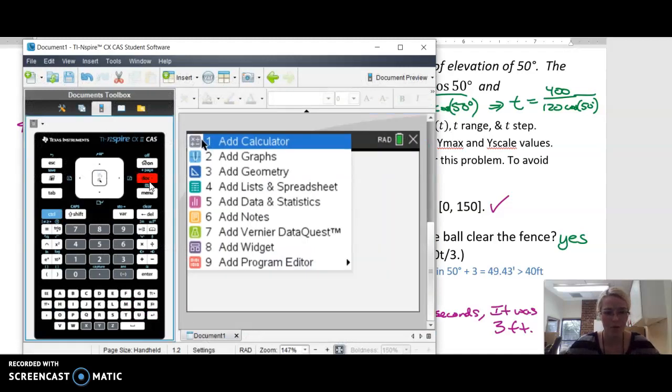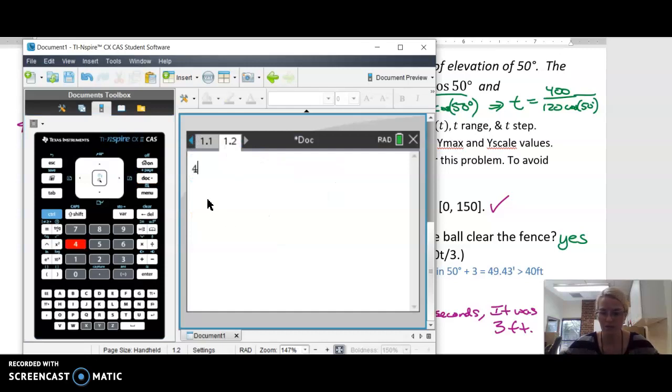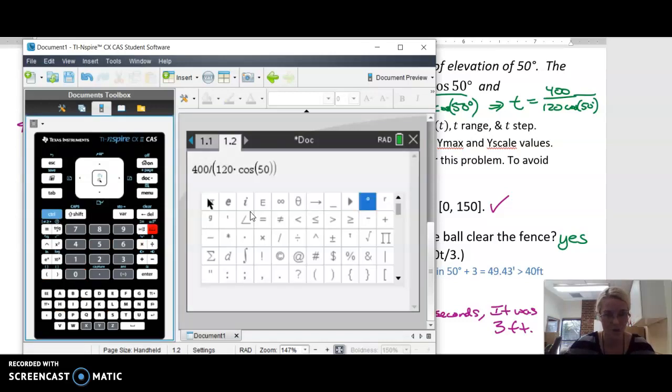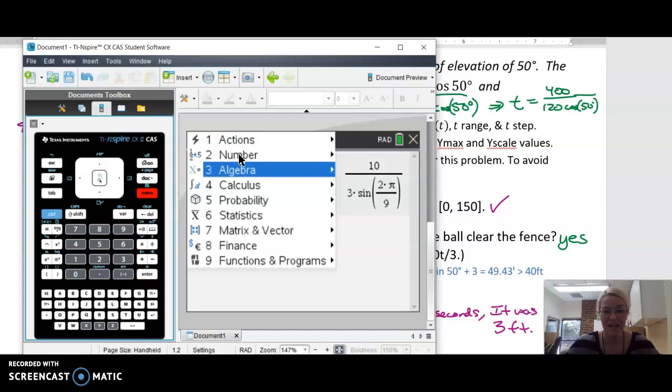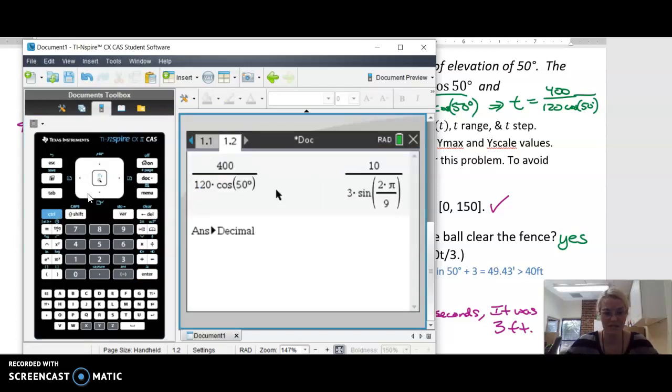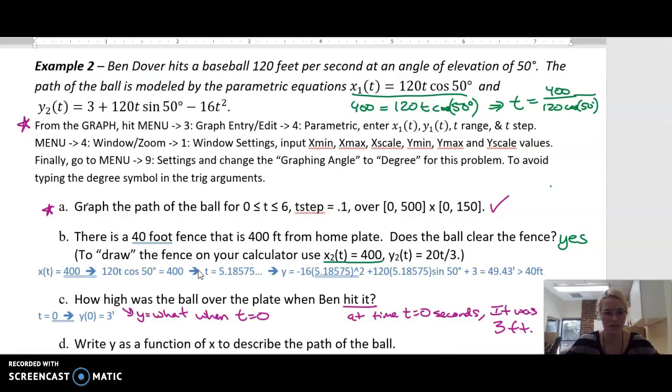I'm going to open up a new page, go to calculator, and I want to know what is 400 divided by parentheses 120 times cosine of 50 degrees. I'm going to type in the degrees symbol, close parentheses. It's going to give me a beautiful trig equivalence that doesn't help me. So I'm going to go to menu, number, convert that to a decimal for me. It's going to take the previous answer. That's about five seconds. It takes five seconds for it to reach 400 feet away from home plate in the purely horizontal direction. So 5.18575 is what you see, solving this for T.